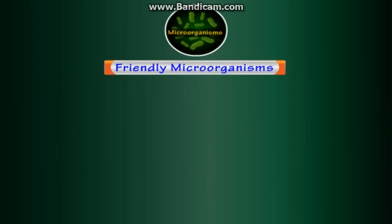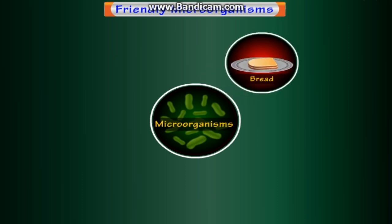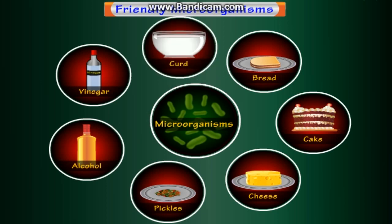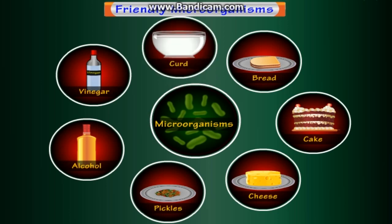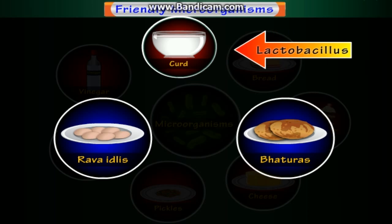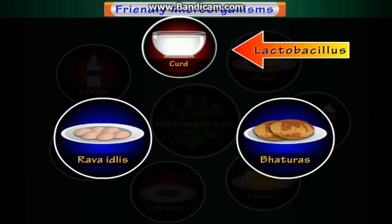Friendly microorganisms are used for various purposes. They are used for making bread, cake, cheese, pickles, alcohol, vinegar, curd, etc. An important ingredient of rava idlis and batters is curd, because lactobacillus present in the curd releases a gas that makes the idlis and the batters soft and fluffy.